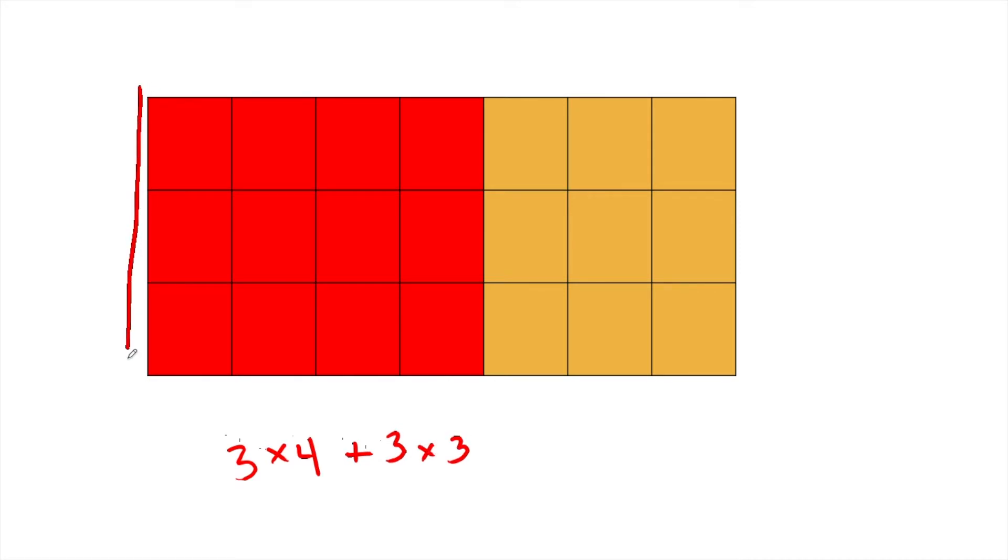Adding on of areas allows us to do some really important math. This shape right here is three groups of four - three rows with four in each. Then we put on another shape that's three rows of three. And if we think about this as one big shape, then instead we would think of it as equal to three rows of seven.